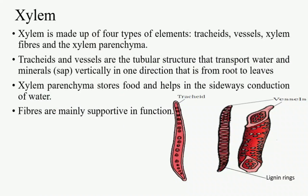Xylem is made up of four types of elements: tracheids, vessels, xylem fiber, and xylem parenchyma. Of these four components, xylem parenchyma is living; the rest — tracheids, vessels, and xylem fiber — are dead. That is why xylem is considered mostly dead. Tracheids and vessels are tubular structures responsible for transportation of water and minerals, also known as sap, moving from root to leaves in an upward direction. Xylem parenchyma stores food and aids in lateral conduction of water.